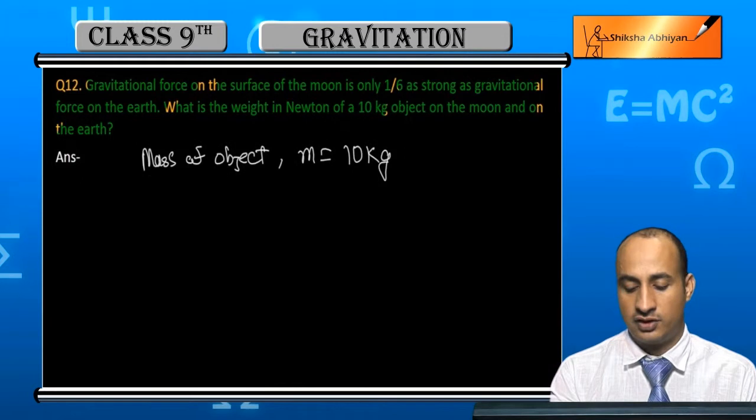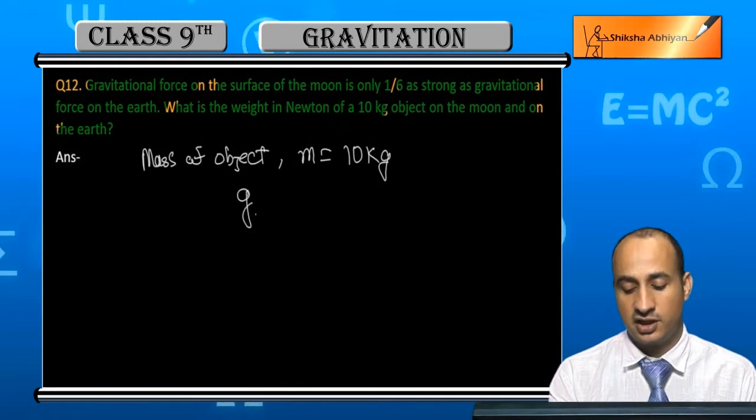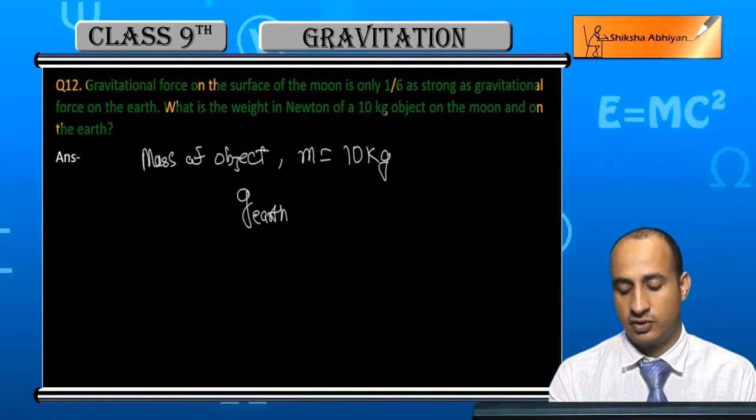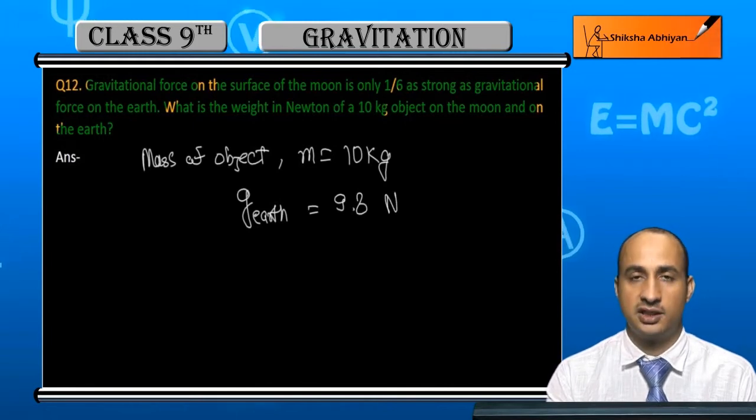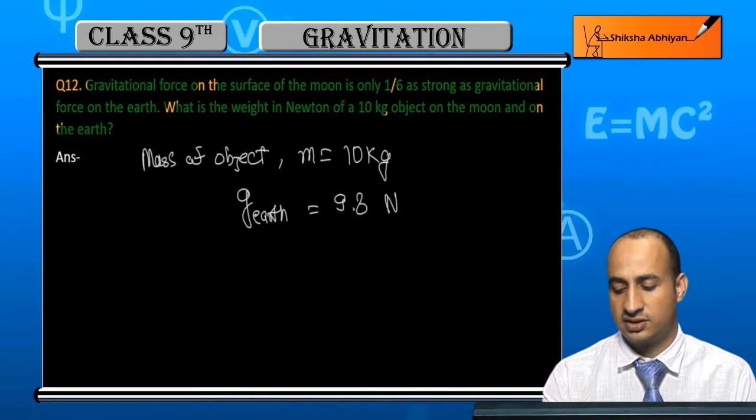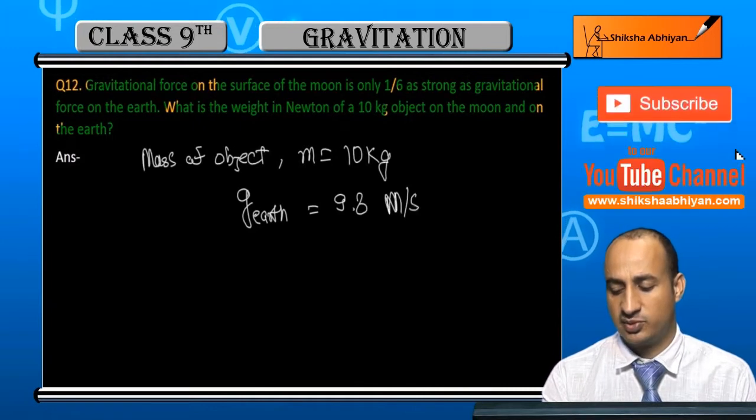Now, gravity of earth is equal to 9.8 meter per second square. This is meter per second square.